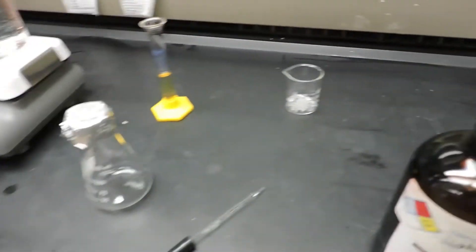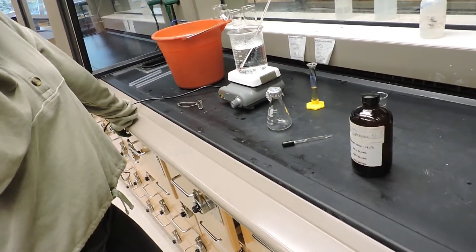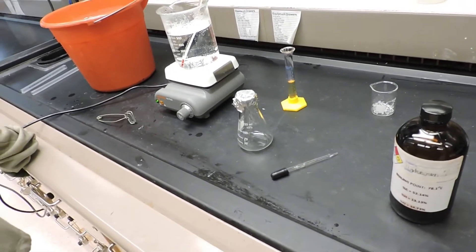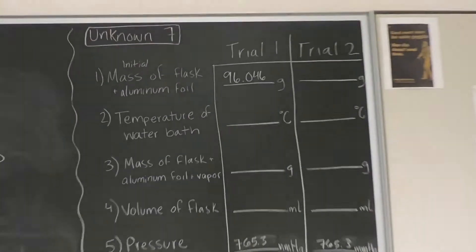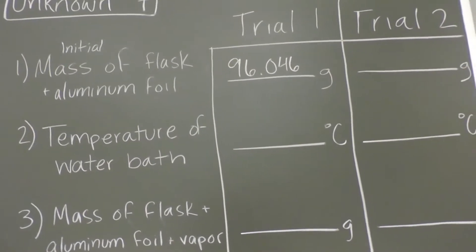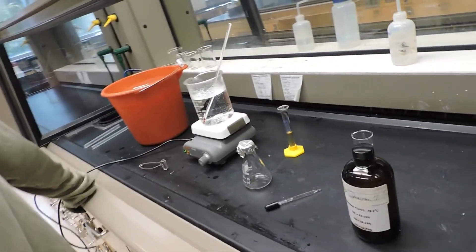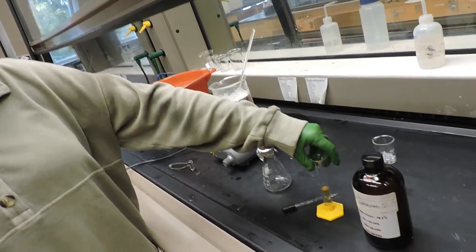The first thing we're going to do is find the combined total mass of this Erlenmeyer flask with the piece of aluminum foil and record that mass, which we have done up here for the first trial. The mass of the flask and aluminum foil is 96.046 grams.